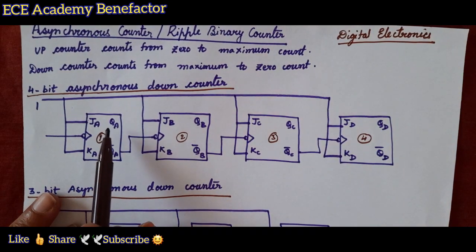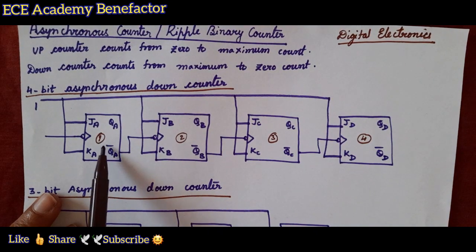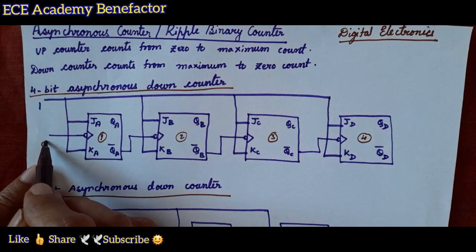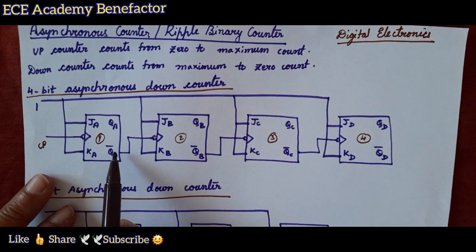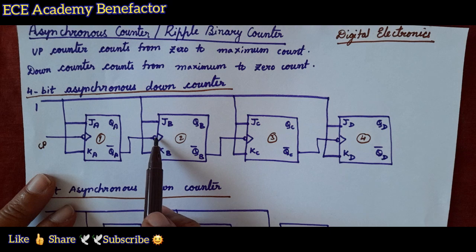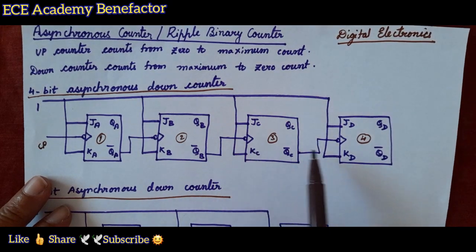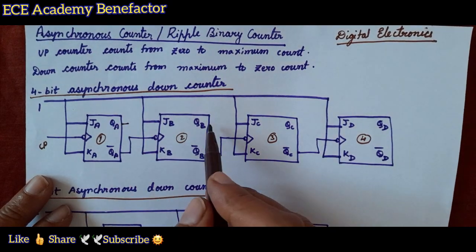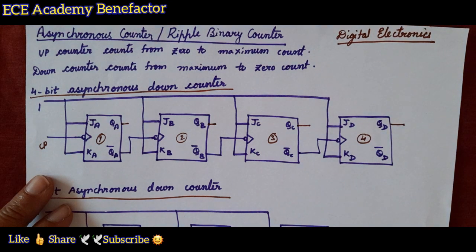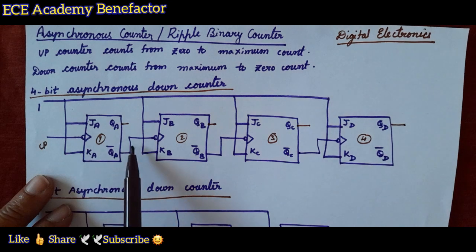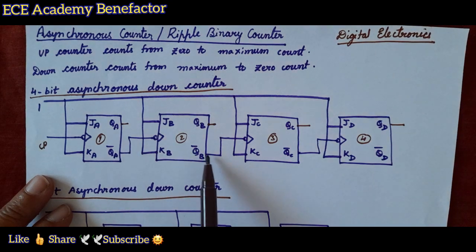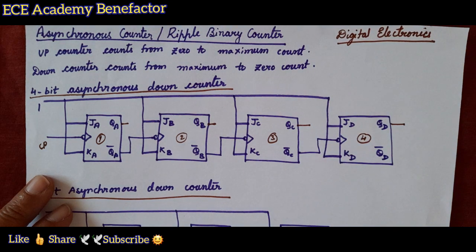For a down counter, we have two outputs: QA and QA-bar. When the clock is going from QA-bar, we say it as a down counter. To the first flip-flop we give the clock pulse externally (CP). To the second flip-flop, QA-bar acts as clock; QB-bar acts as clock to the third; and QC-bar acts as clock to the fourth flip-flop. The output is taken at QA, QB, QC, QD. It is called a ripple counter because the clock traverses as a ripple — like ripples formed when a stone is put in a river, going from one flip-flop to another.